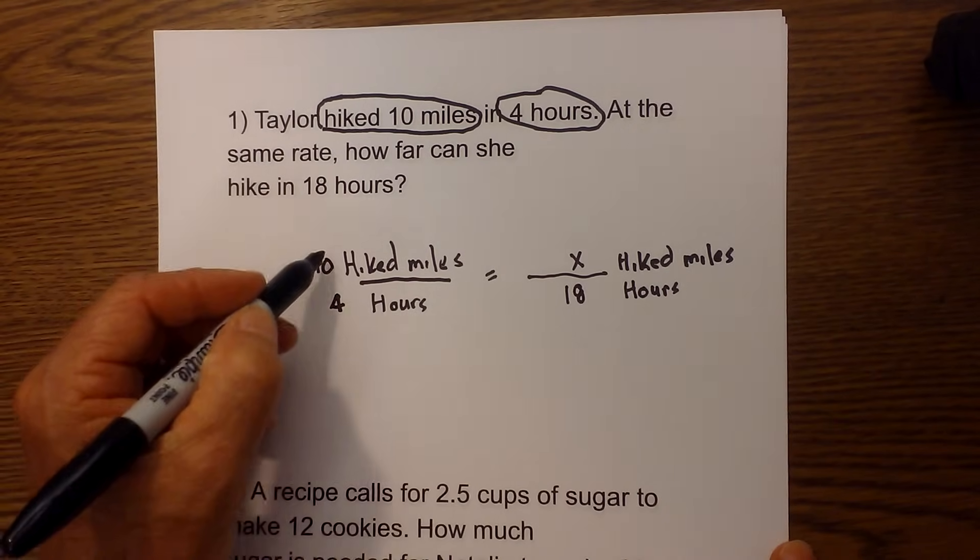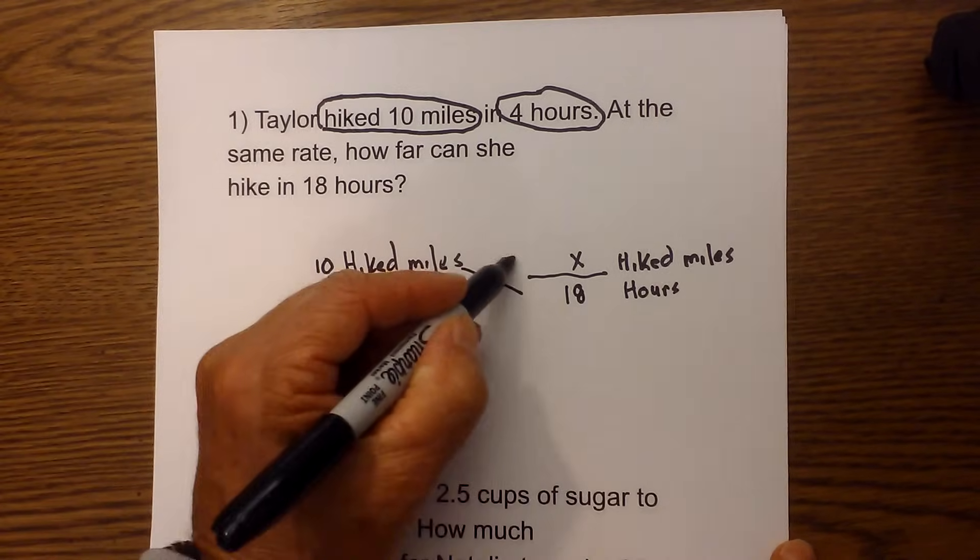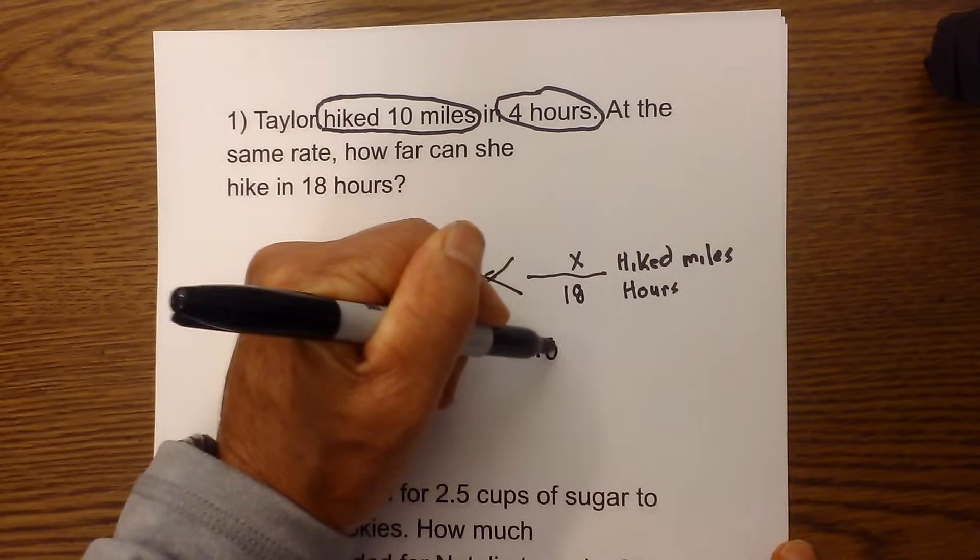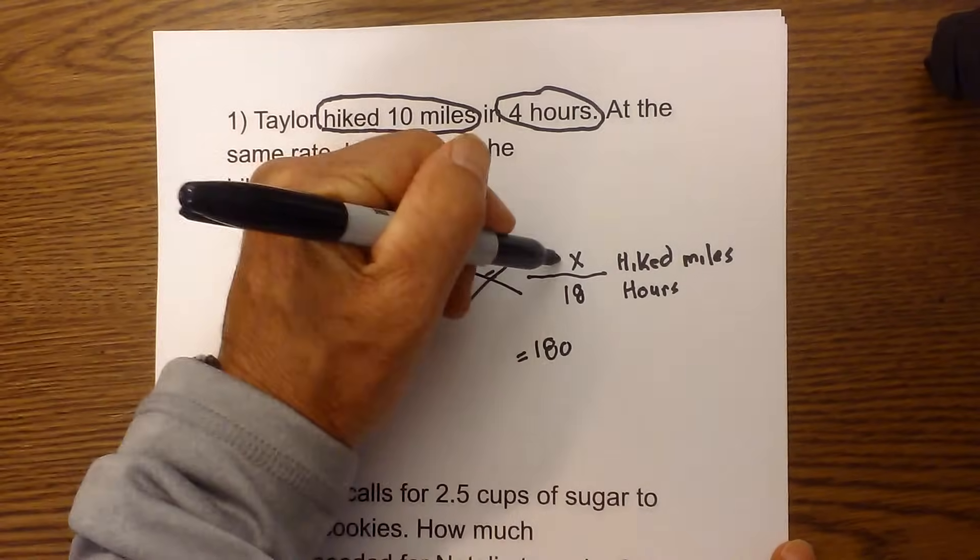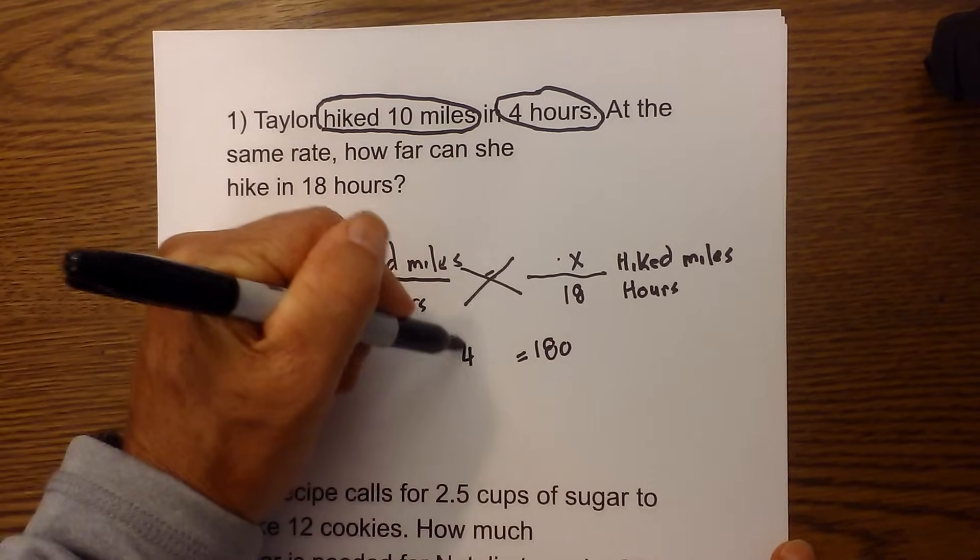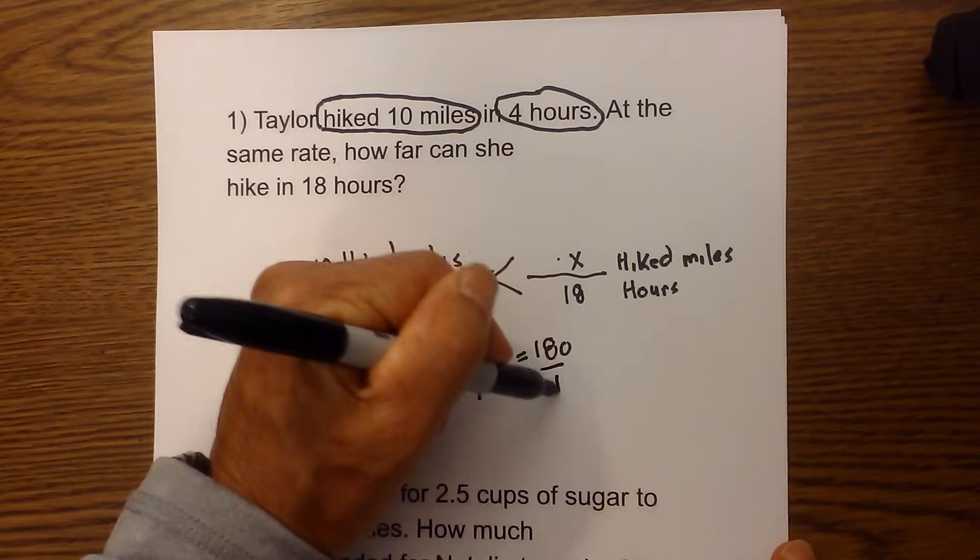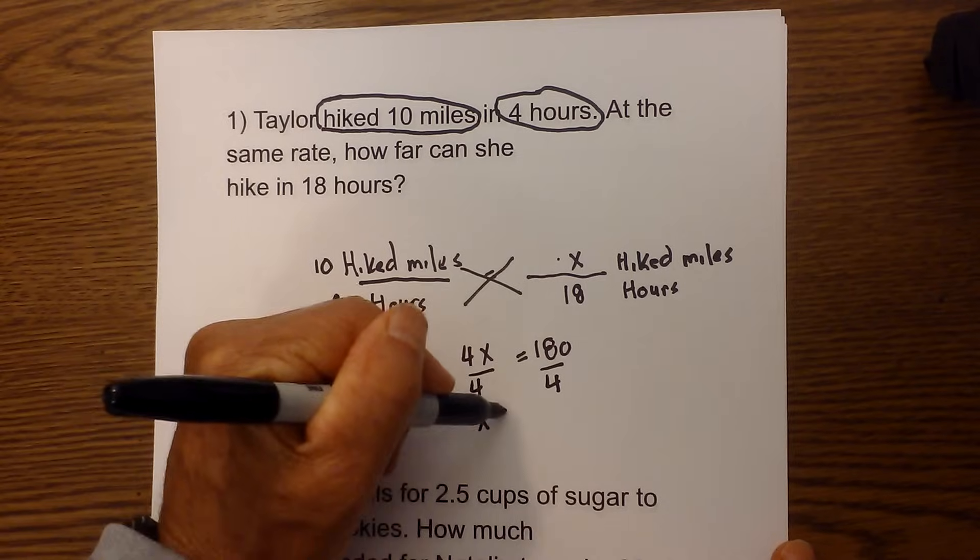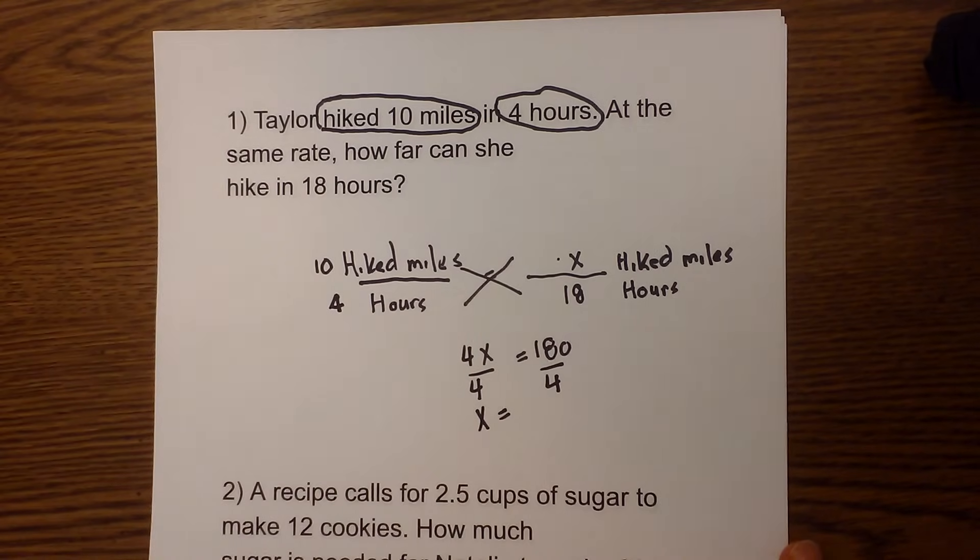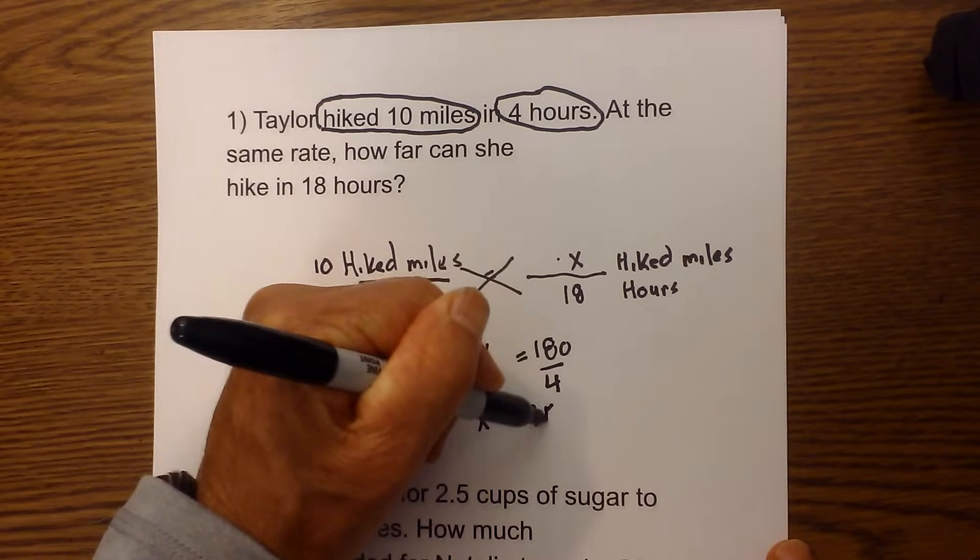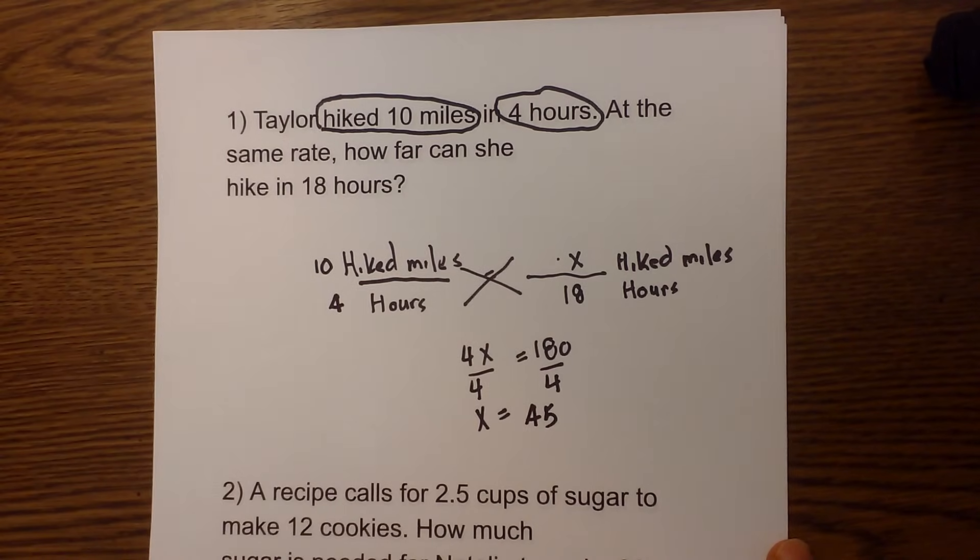So I then do a cross product. 10 times 18 is 180, which equals X times 4, or 4X. Now to isolate the X, I divide each side by 4, so this becomes X is equal to 180 divided by 4.